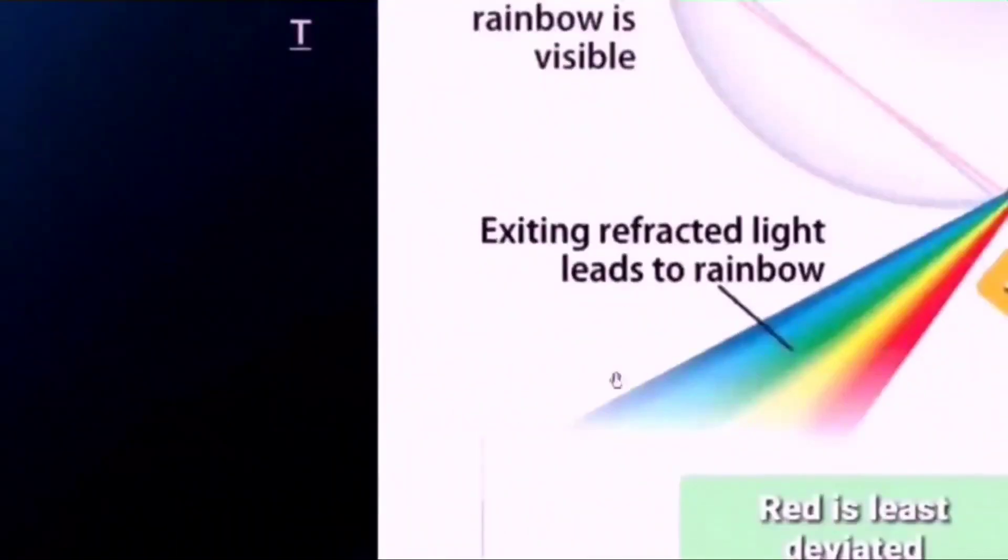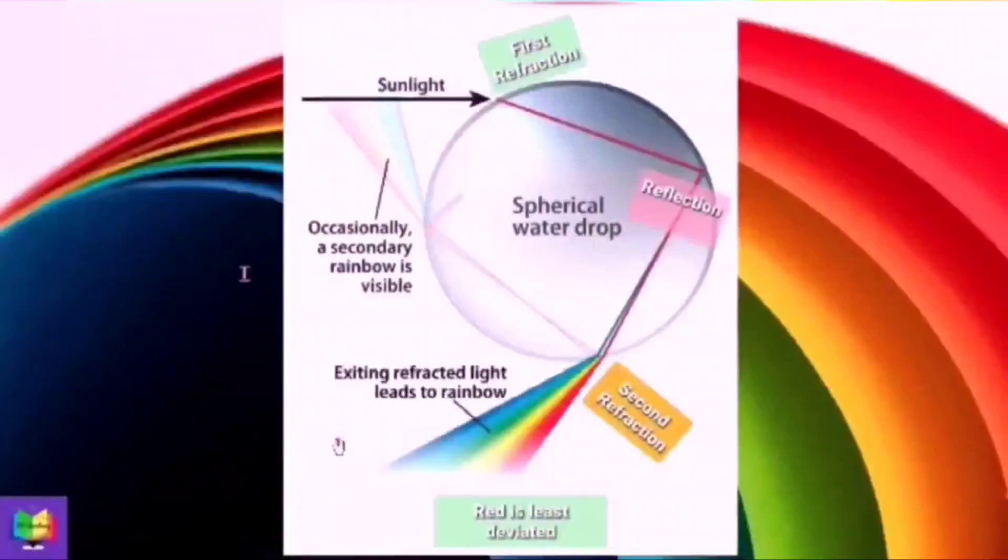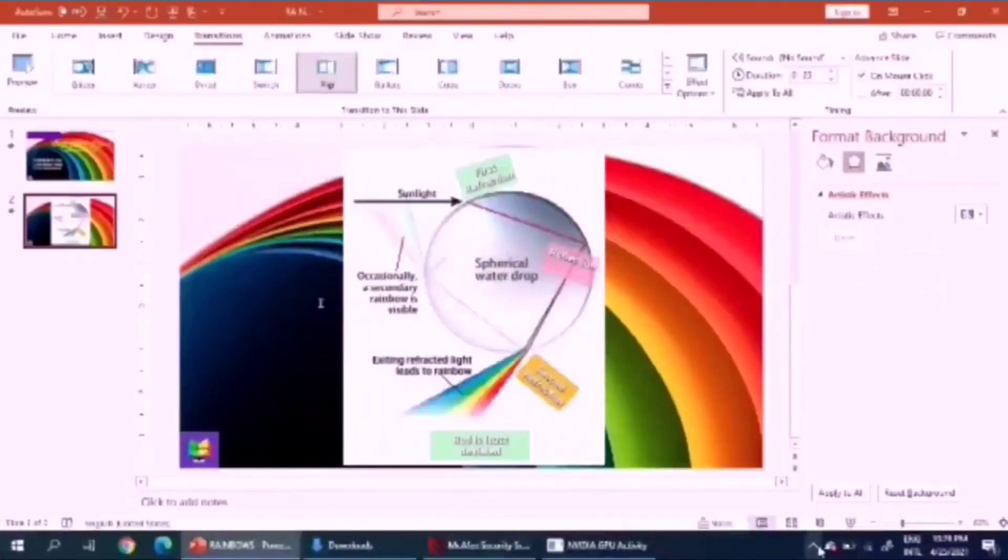The visible region of electromagnetic spectrum shows that violet has the least wavelength which is around 400 nanometers, hence this color is deviated the most. Whereas red has the highest wavelength which is around 700 nanometers.